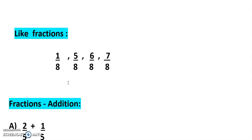First, let us see what is a like fraction. If the denominators are the same, then we can say it is a like fraction. For example: 1/8, 5/8, 6/8, 7/8 — this is called a like fraction, because all the denominators are the same.